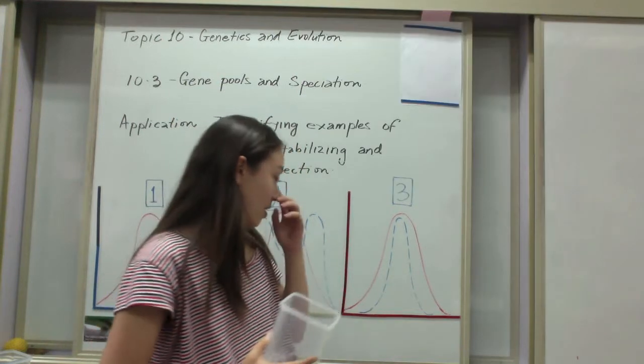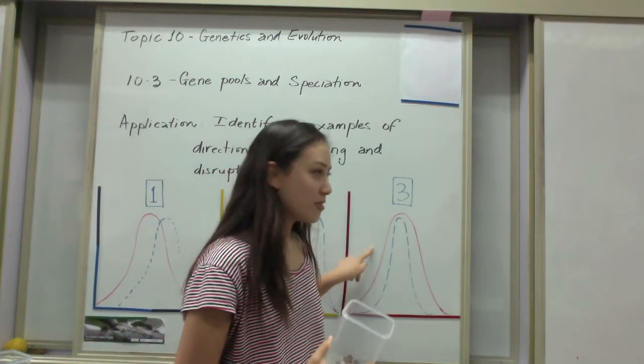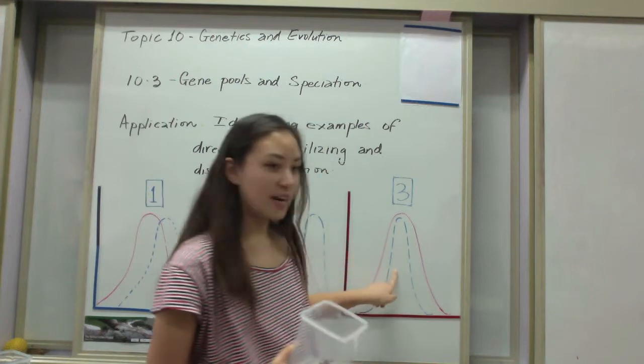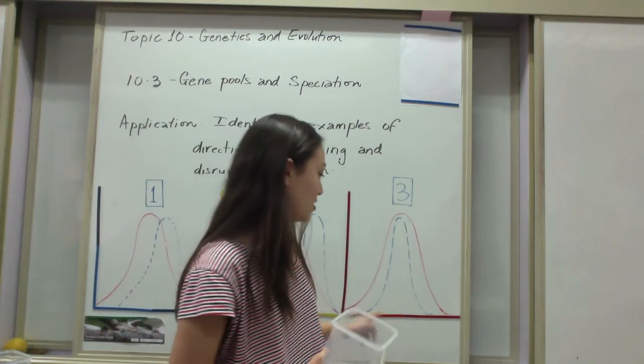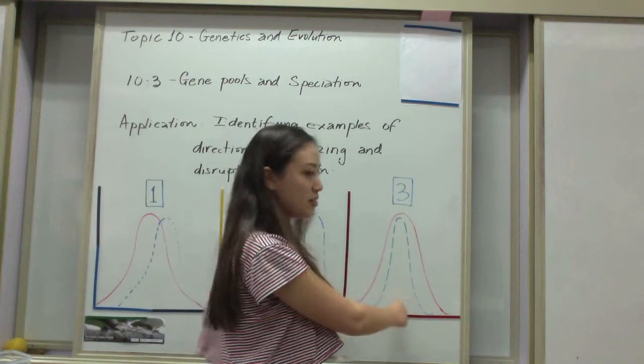Is that shown on the diagram? Yeah, so red is before and blue is after. There's more variety, but it's concentrated in the middle.